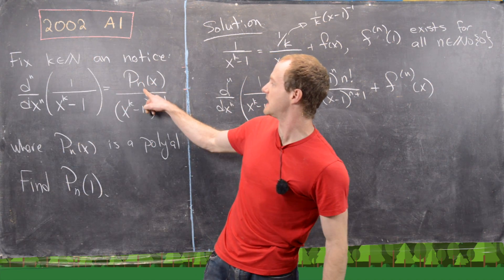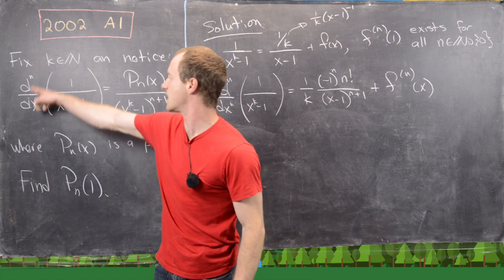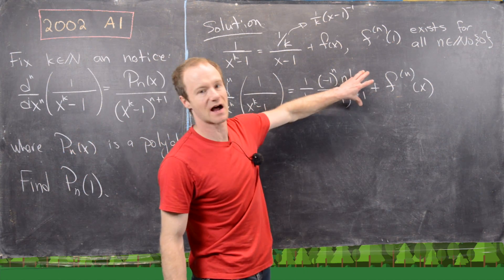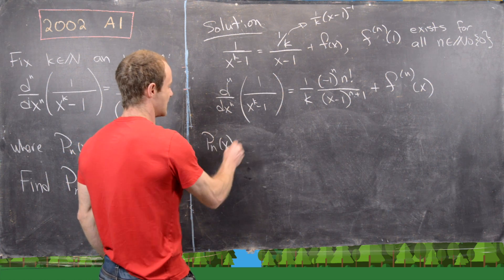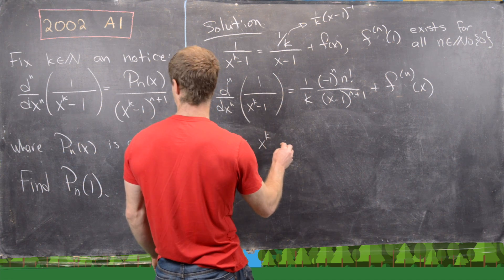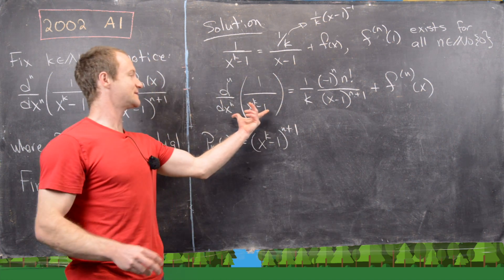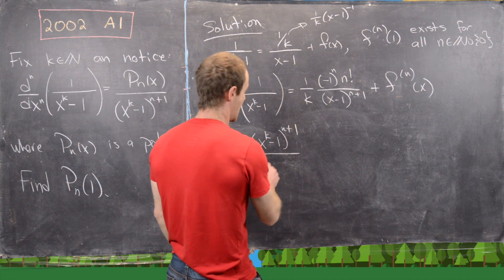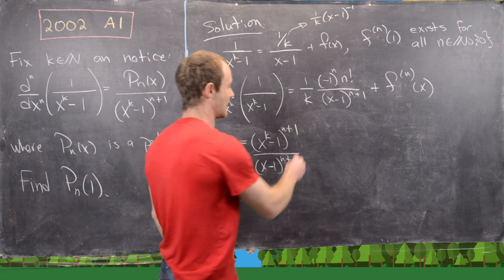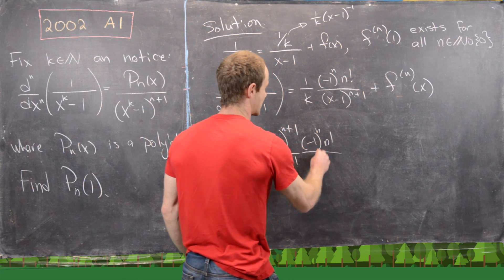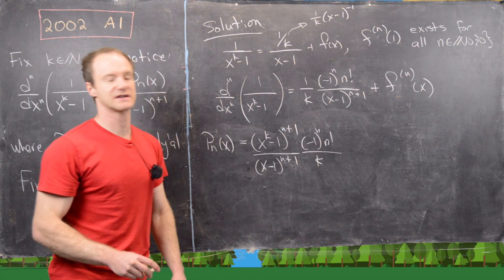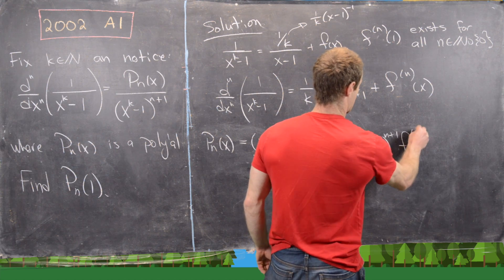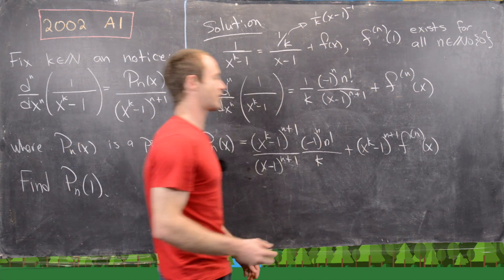Now p_n(x) equals this nth derivative multiplied by x^(k-1) to the n+1. Distributing through both terms: we get x^(k-1)^(n+1) times ((-1)^n · n! / k) over (x-1)^(n+1), plus x^(k-1)^(n+1) times the nth derivative of f evaluated at x.